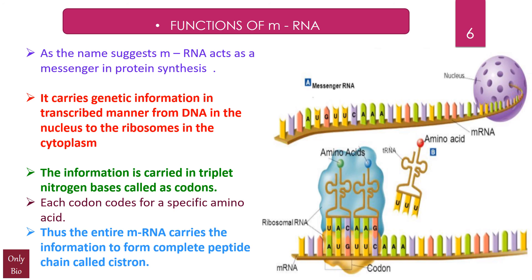The entire mRNA carries the information to form a complete peptide chain, and that length of mRNA which has the information for the formation of a complete peptide chain is called a cistron. The mRNA formed is not a refined version immediately — it is processed, and after processing it takes up the form of a cistron.